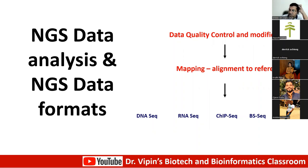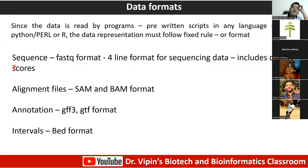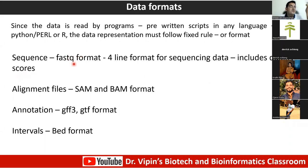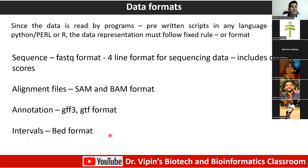The most common format is the sequence format — the FASTQ format, which is the standard format for representing sequence data. It is a four-line format for sequencing data and includes quality scores, which is why it's called FASTQ. Then you have alignment files in SAM and BAM format. There is also annotation in GFF3 and GTF format, and the intervals or BED format.